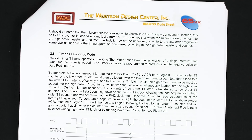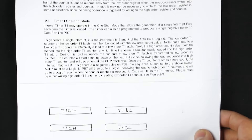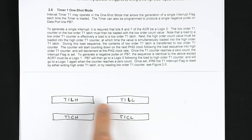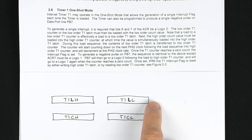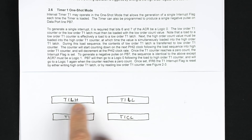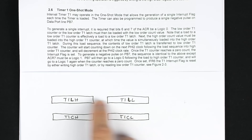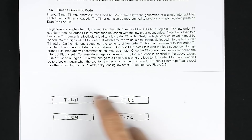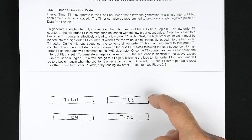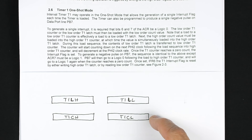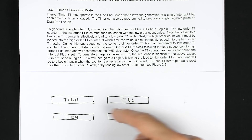The datasheet on page 17 describes how the timer works. It's a bit confusing because there are four registers: timer one latch high and low, and timer one counter high and low. Together, the low and high in each case make up a 16-bit value. The latch tells us what the counter was set to — where it started. The counter tells us the current value as it counts down. When the timer starts, the latch and counter are equal, then the counter starts counting down.